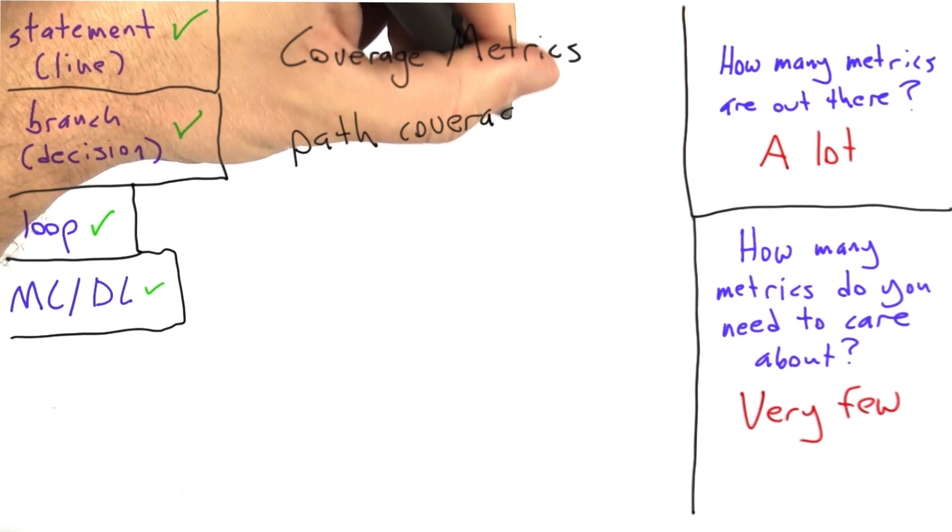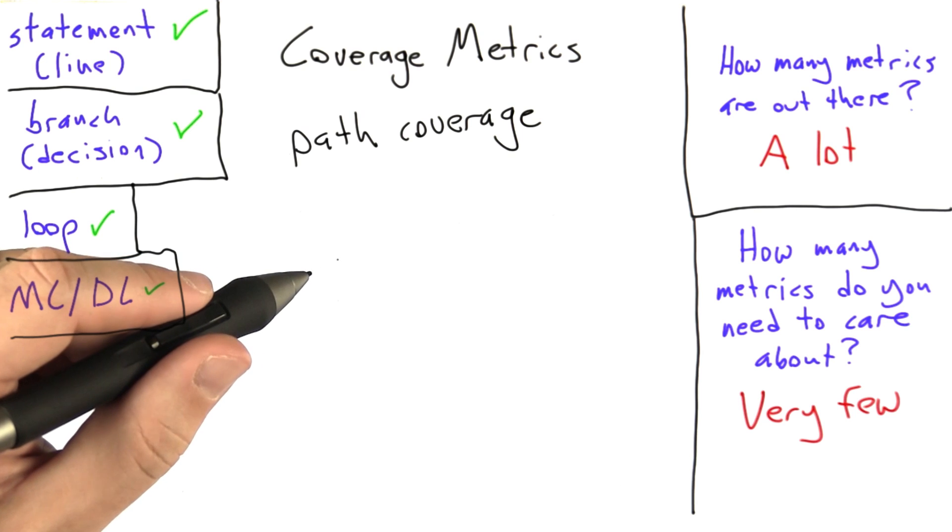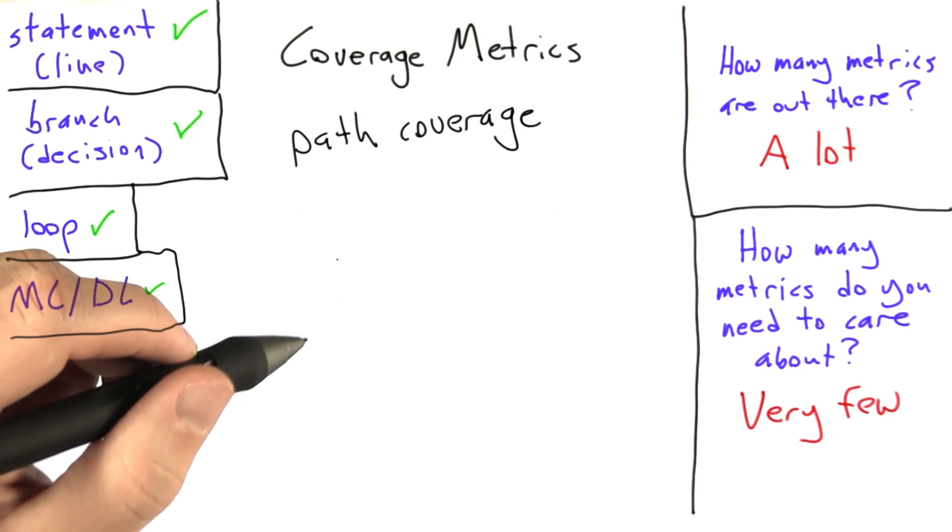So the next coverage metric we want to look at is called path coverage. Path coverage is a little bit different than previous metrics we've looked at because it cares about how you got to a certain piece of code.